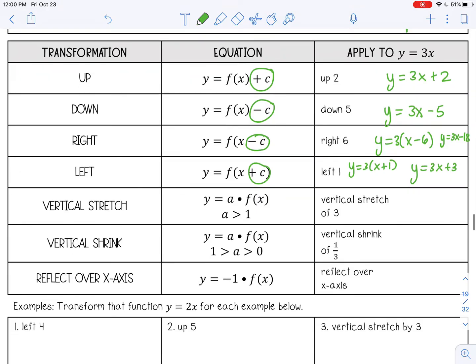A vertical stretch means you're going to be multiplying by a certain number. And in this case, I want to multiply by three. So y equals three times 3x, which is 9x. And a stretch is going to make your line have a steeper slope. So it's going to rise faster. And you know it's a stretch because that number we're multiplying by is greater than one.